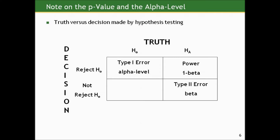Let's categorize this as one of the types of mistakes we can make — we'll be talking about the other types in the second part of the course. Here's a two-by-two table detailing the truth — what's really going on, the null or the alternative — versus the decision we can make with our hypothesis testing process. If we decide to reject the null when in fact the null is true, we've made a type 1 error. We won't know we've done that, but that's actually what we've done. The other mistake is not rejecting the null when the alternative is true — we'll spend more time on that in the second part of statistical reasoning.